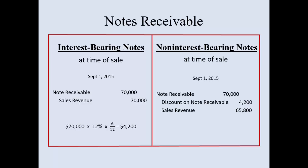With a non-interest bearing note, remember that interest is hidden. So instead of recording the interest later, you're going to record Discount on Notes Receivable as $4,200. The notes receivable remains the same — you tell your customer there's no interest, but what you're charging them includes principal and interest. With a non-interest bearing note, the sales revenue is less, and the discount on notes receivable is a contra asset to notes receivable.